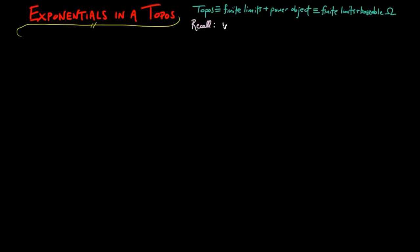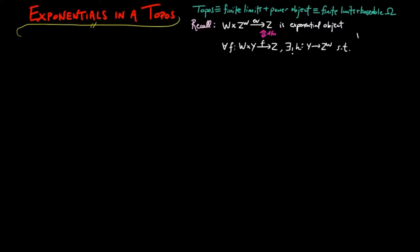Recall that an exponential object is an object z to the w and a morphism called evaluation from the product w cross z to the w to z, such that for any morphism f from w cross y to z there exists a unique factorization h from y to z to the w such that the composition of evaluation and one cross h is equal to f.